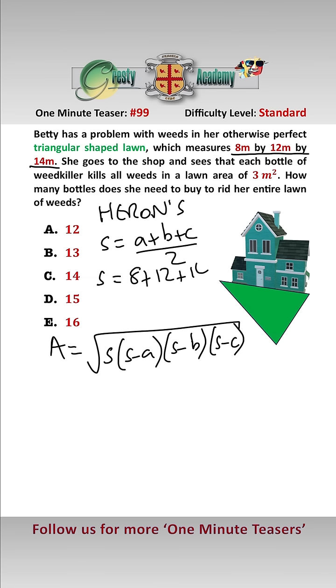So the half perimeter is equal to 8 plus 12 plus 14 over 2, which equals 17.